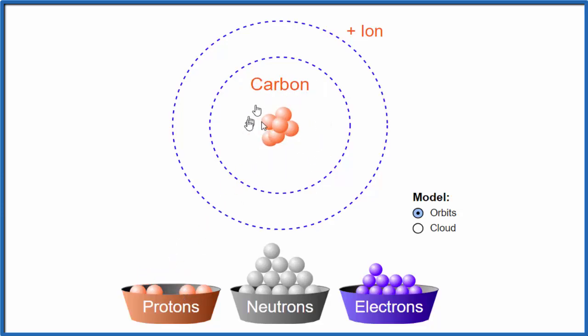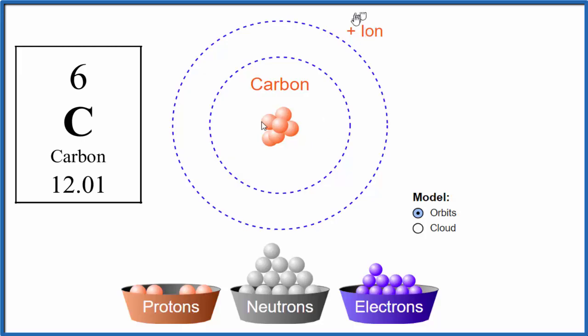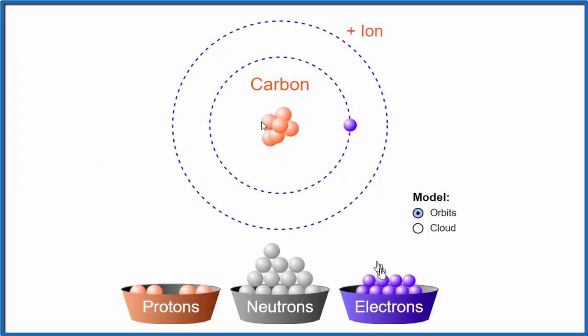So there's carbon - six protons in the nucleus. It's a positive ion right now. When we look at the periodic table, we just see C. There's no plus or minus after, so we need to put an equal number of electrons. These are negative, the protons are positive, so they'll balance out and give us a net charge that's zero.